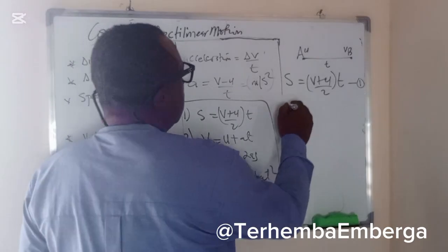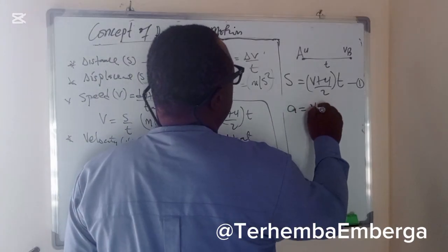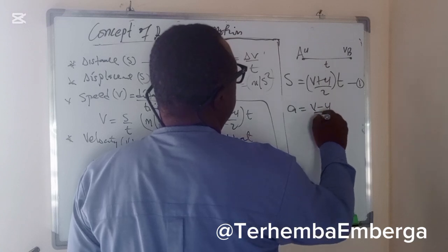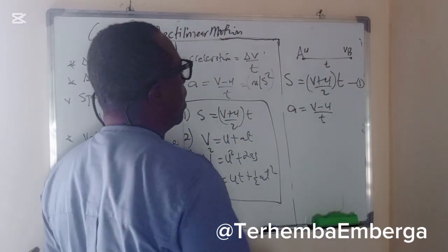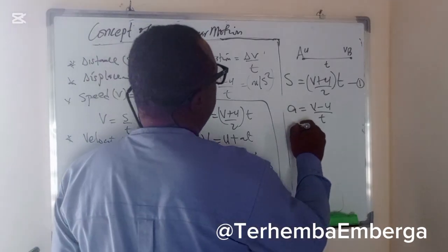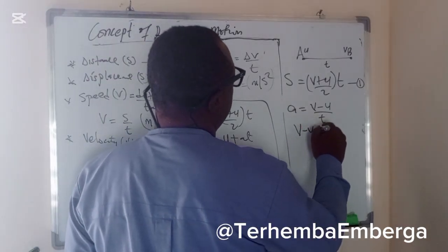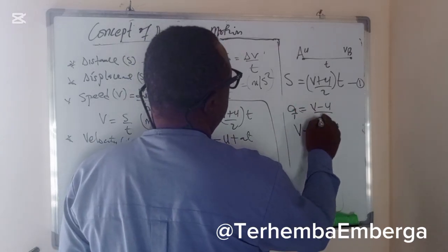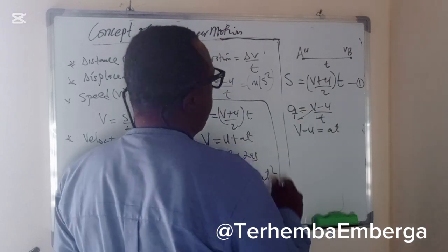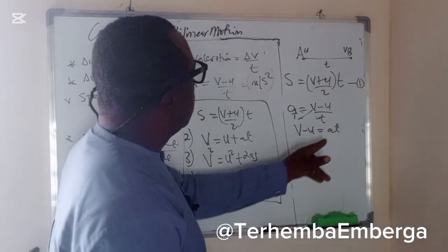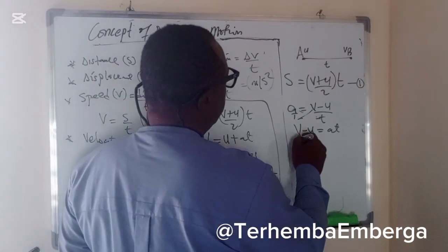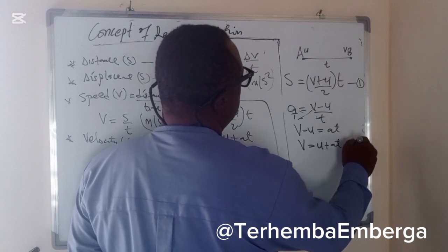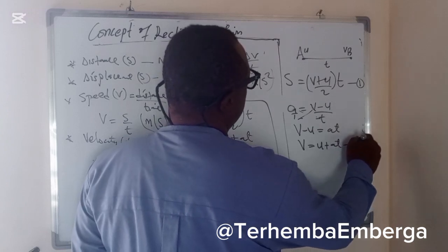From the definition of acceleration, we say that acceleration equals v minus u all over t. We can rearrange this: v minus u equals at, by cross multiplication. By taking u to the right-hand side, we have that v is equal to u plus at. We can call this equation two.